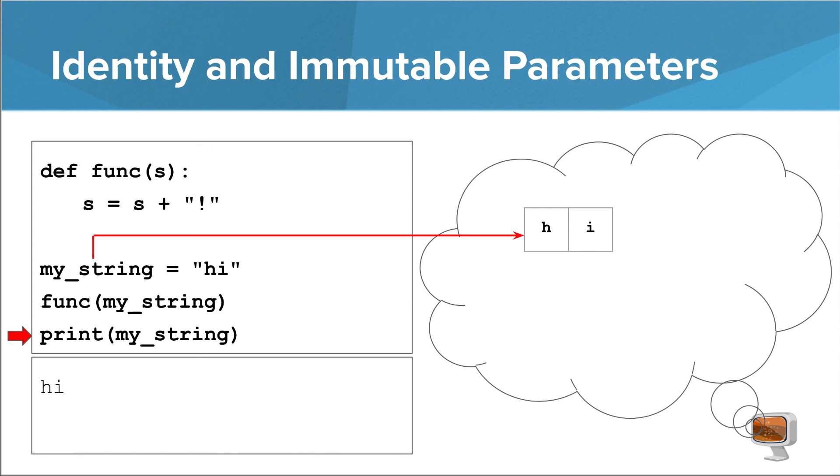In general, the distinction between equivalent and identical is less critical with immutables, simply because you cannot affect what one variable sees via another variable.